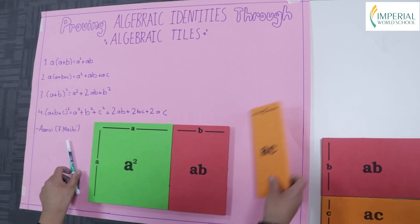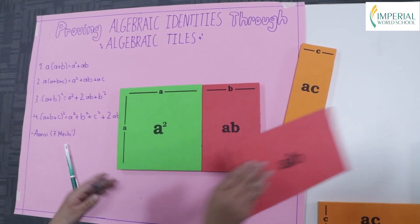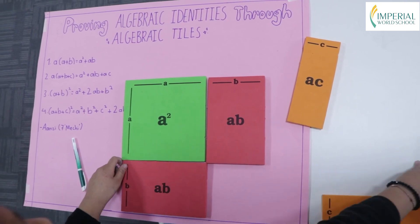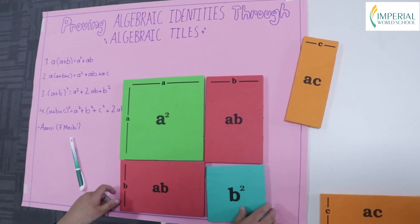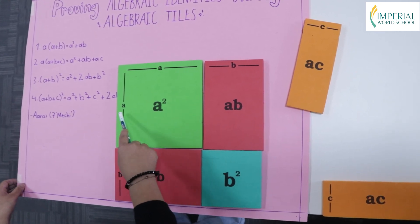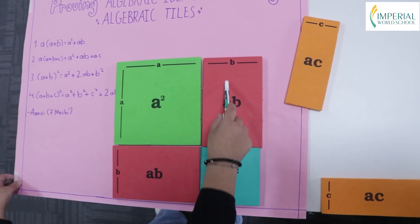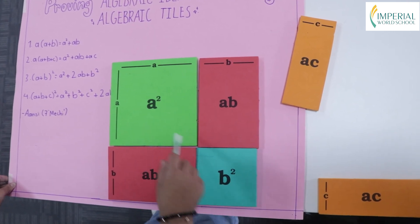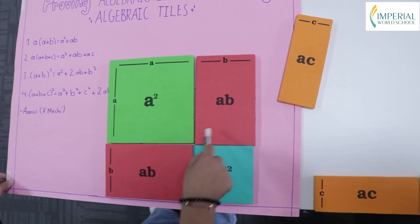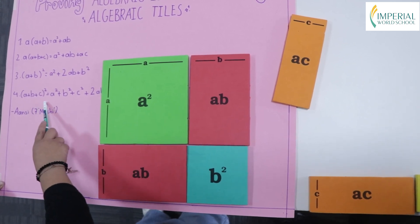Now we're going to move into (a + b) whole square. For this we have to make our length and breadth equal. Our length is a + b and our breadth is also a + b. So a times a is a², a times b is ab, b times a is ab, and b times b is b². Hence (a + b)² = a² + 2ab + b², because there are two ab's.